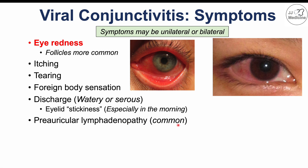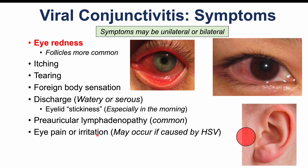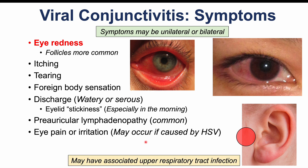The preauricular lymph node location is a common finding in viral conjunctivitis. There may be eye pain or irritation, especially if the viral conjunctivitis is caused by herpes simplex virus, but most of the time eye pain is absent aside from that burning or gritty foreign body sensation. Viral conjunctivitis may be associated with an upper respiratory tract infection — a patient may develop viral conjunctivitis first and then a common cold, or may have had a respiratory infection that then leads to viral conjunctivitis afterward.